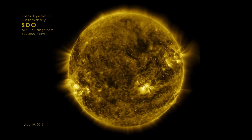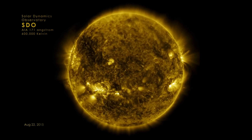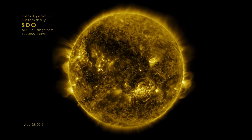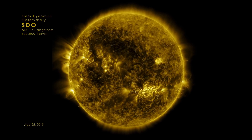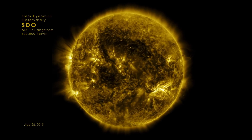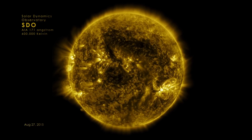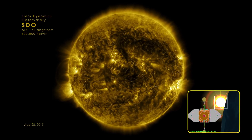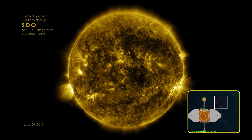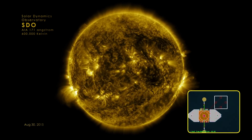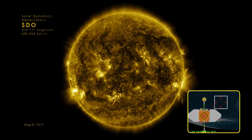When we see the frames go dark, that's eclipse season. That's when the Solar Dynamics Observatory, which is orbiting the earth, goes behind the earth, and the earth is between the Solar Dynamics Observatory and the sun, so the earth eclipses the images.